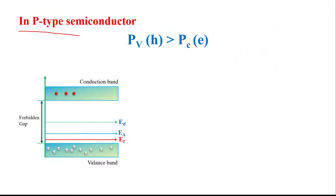Now, P-type semiconductor material. To form P-type semiconductor material, we add a trivalent impurity or acceptor impurity in the pure semiconductor material. In the case of P-type semiconductor material, conduction happens mainly due to the holes, because in P-type semiconductor, holes are the majority carrier.